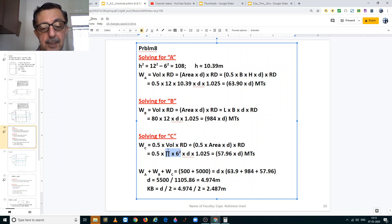Here is the value of the area, pi r squared, the radius which is 6 meters as it is given. d is unknown. And relative density of the liquid in which the vessel is floating is 1.025 salt water. So we take half of that and that works out to 57.96 times the draft metric tons.